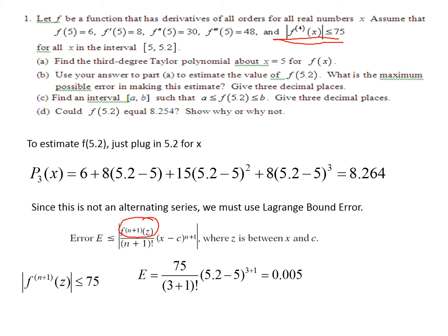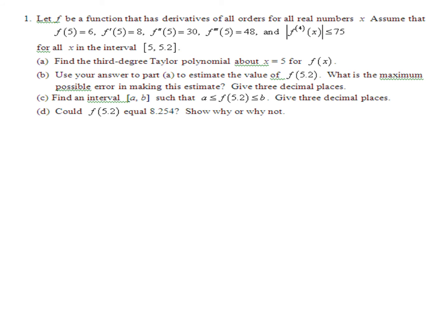So now it's just a matter of evaluating, and I get the error is 0.005. So what does that tell me? Well, when I found my estimate using this third-degree polynomial, I found the estimate to be 8.264.